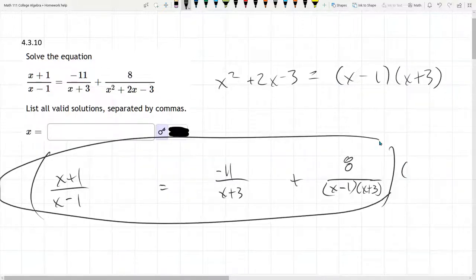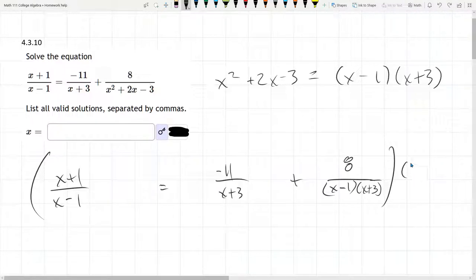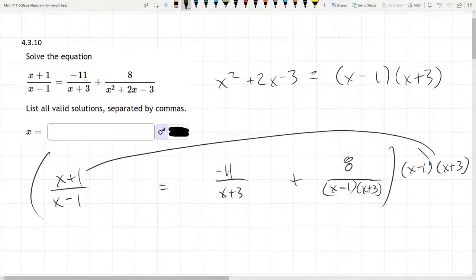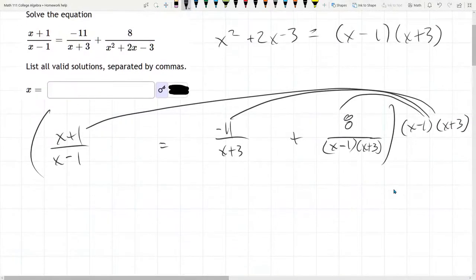I've rewritten the equation really big right here. So distributing both of these to all three terms. We'll start on the left. x minus 1 cancels the x minus 1. We're left with x plus 1. So the numerator times x plus 3.